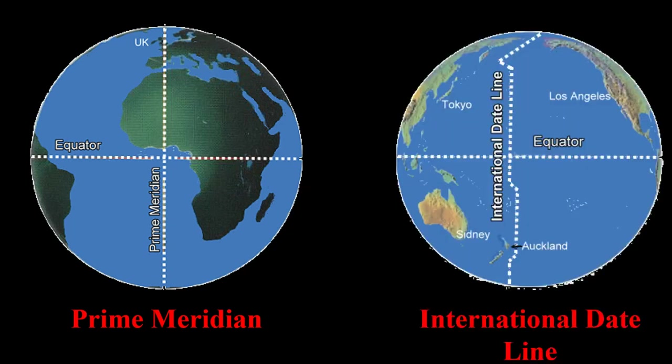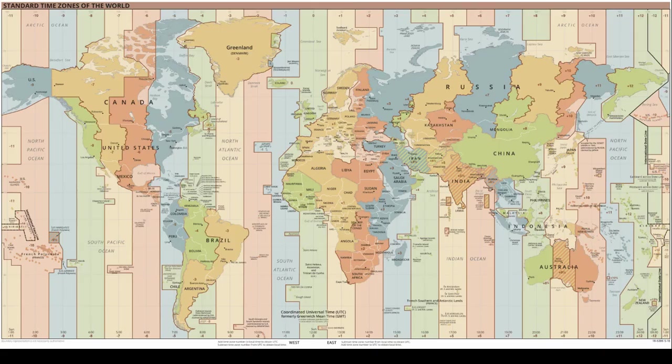On the exact opposite side of the world from the prime meridian is our final line of the day, the international date line. This is literally the line that divides one day from another. You guys know about time zones, right? You know how if I started in Texas and drove east, I would eventually make it into the eastern time zone where the time would be an hour later, right?